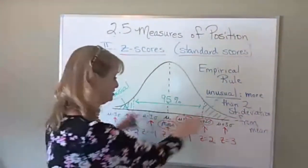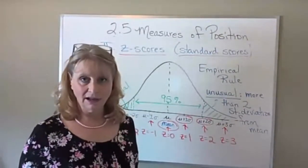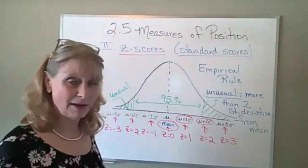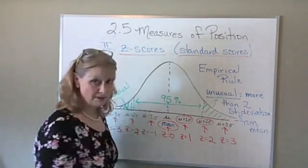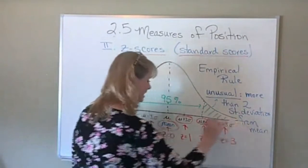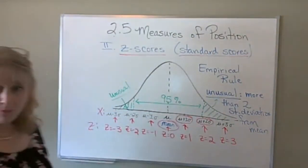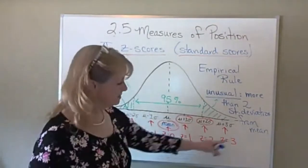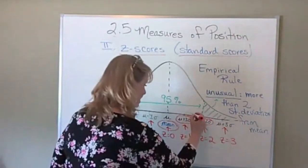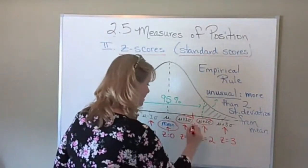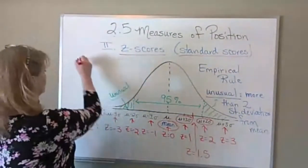Every data set has a different mean and standard deviation, but you can standardize any data set by converting to z-scores. The z-score for the mean will always be zero, and you number this scale with zero in the middle, positive numbers to the right, negative numbers to the left. You can have in-between values — if a data value fell exactly halfway between, its z-score would be 1.5.